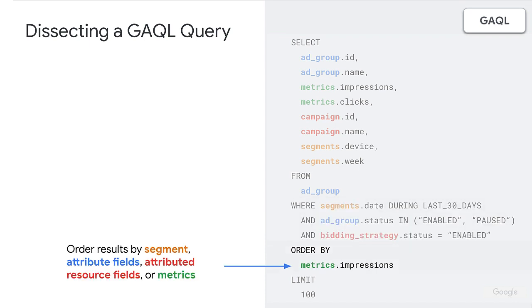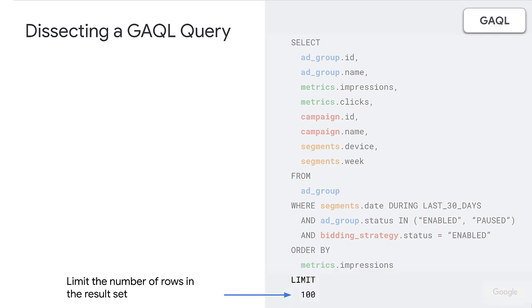Next, we can order our result set. We can do so by segments, attribute fields, attributed resource fields, or metrics — there are some details in terms of what you can put there and when, but we're not going to get into that nitty-gritty detail today. And then finally we have LIMIT — we can put an integer there to limit the number of rows in your result set. And with that, you've walked through the entire grammar and syntax of a GAQL query string.